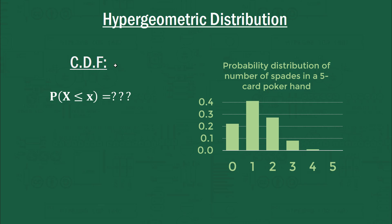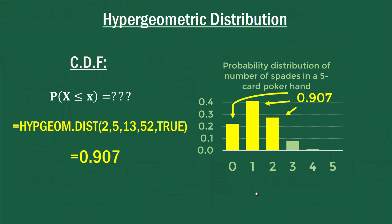How would we find the cumulative distribution function for the hypergeometric distribution? It has a large ugly formula, so we won't do it by hand. However, if we wanted to find the cumulative distribution at 2 — meaning the probability of getting 2, 1, and 0 combined — we can do the same thing but write TRUE in that final argument. And that'll add up those three columns for us to provide 0.907.